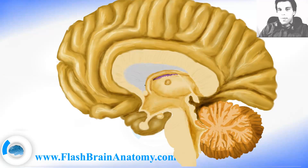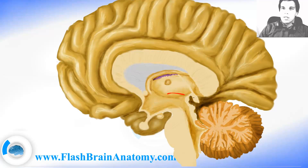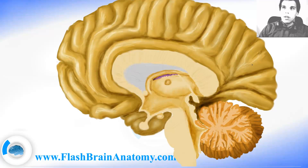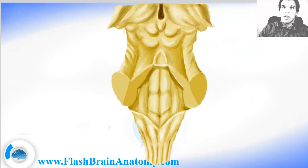Now I will explain everything very short and quick just for overview. The first part of the diencephalon is the epithalamus, which is here on the back. It is made up by the pineal gland and the posterior commissure. If we make a cut here and take away this part and look from here, we would see the pineal gland and the third ventricle.